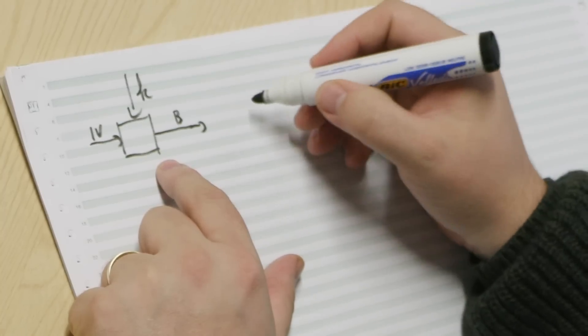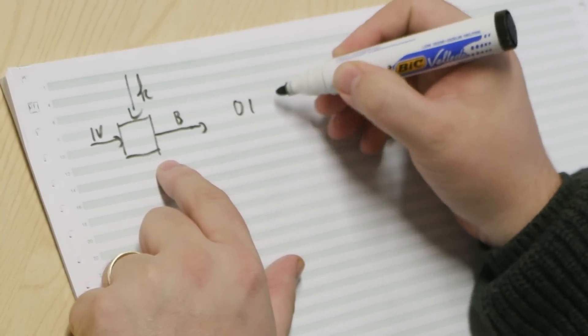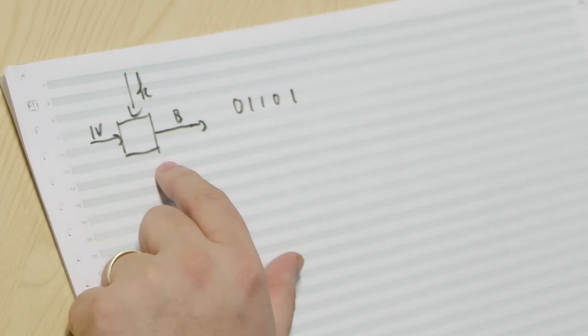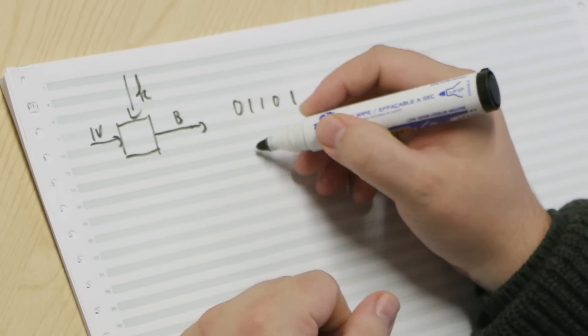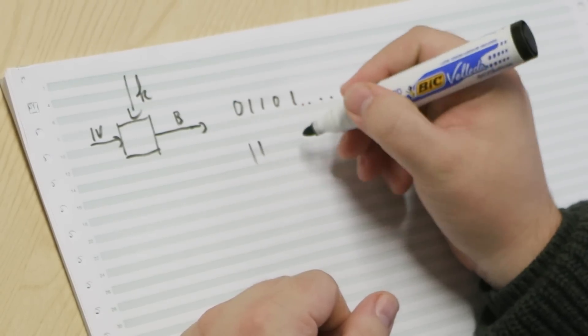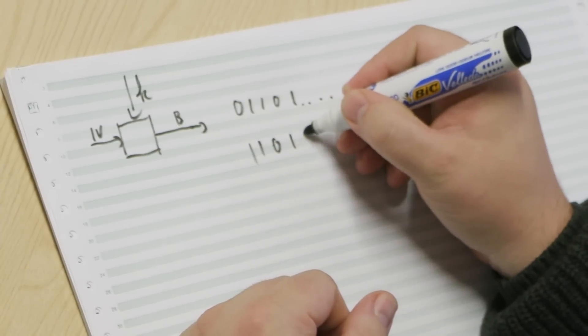And it will look something like 0, 1, 1, 0, 1. It's a random bit string, etc. Now we have the plaintext, which is also a bit string, which in this case was the website that you visit that morning. So let's say that it's 1, 1, 0, 1, 1, right?